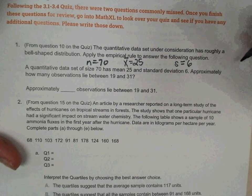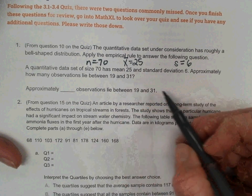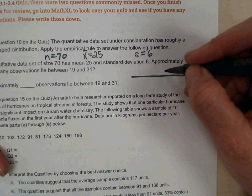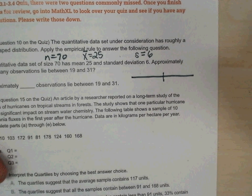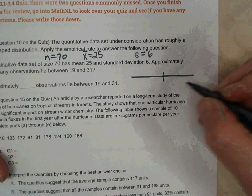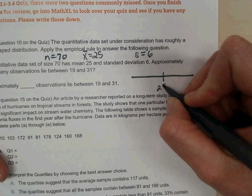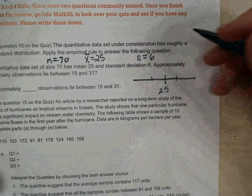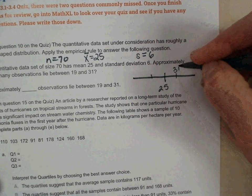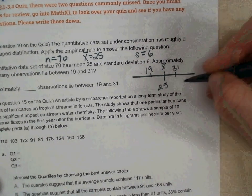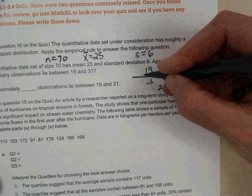Approximately how many observations lie between 19 and 31? This is from the notes 3.3 or 3.4 last week, where we put the mean in the middle, 25. And then we start counting above and below the mean of standard deviation. So up 6 would be 31. Down 6 would be 19. So this is the mean, and this is plus s and minus s. And those were the numbers we were looking for.